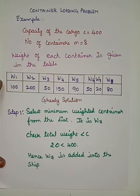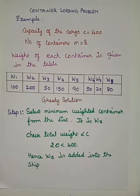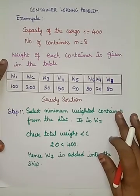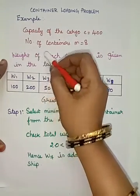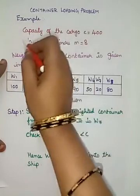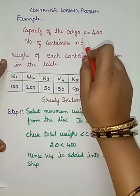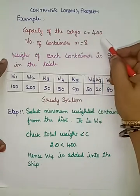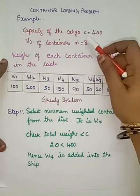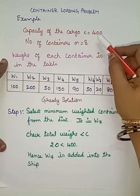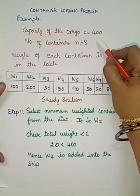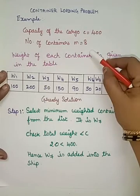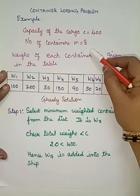In this video lecture we are going to see an example for the container loading problem. In the previous video we saw the introduction to container loading problem under greedy techniques. In this example, I'm going to consider a ship or cargo of capacity C, which is 400. The number of containers ready for loading is eight.